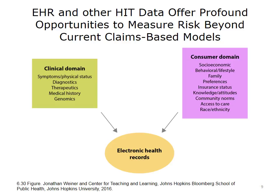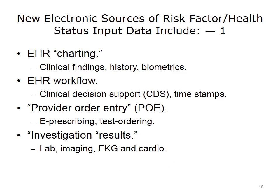New sources include the expanded clinical information found in electronic health records, as well as population and consumer information from a variety of data sources. One new source of information that could expand our knowledge of an individual's risk factors comes from the charting function of the EHR. The core objective of the EHR is to capture information to support the interaction between the clinician and the patient — some examples are clinical findings, medical history, biometric information, blood pressure, body mass index (BMI), family history, and symptomatology.